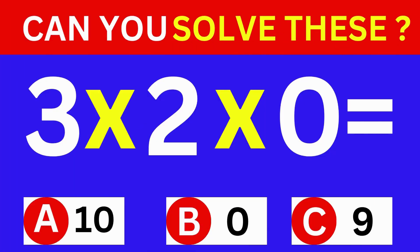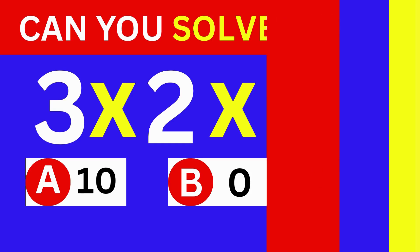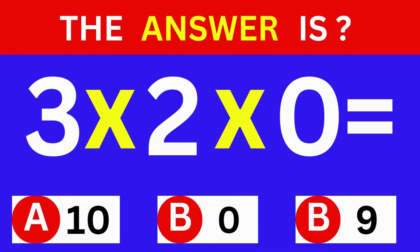3 times 2 times 0 equals. A: 10, B: 0, C: 9. The answer is option B, 0.